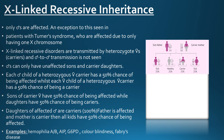In X-linked recessive inheritance, only males are affected because two mutated genes are needed for the disease to manifest. However, in cases of Turner syndrome, where there is only one X chromosome (45X0), if that X chromosome is mutated, the disease will manifest. In X-linked recessive disorders, male-to-male transmission is not seen because the father only transmits the Y chromosome to his son.